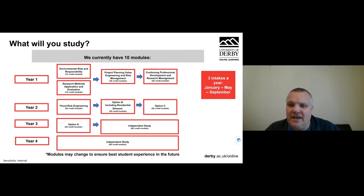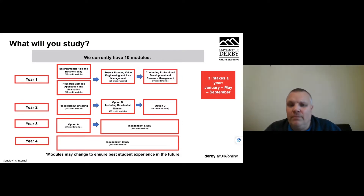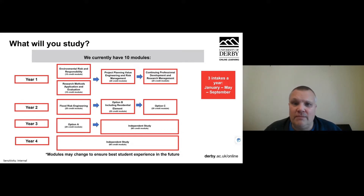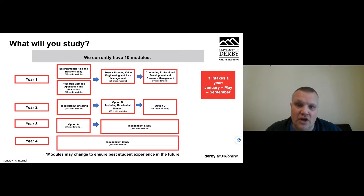There's a map showing how the years work. We offer starts in September, January, and May. In year one you would do environmental risk and responsibility and research methods. In the second trimester you take on project planning, value and engineering risk management, which is 20 credits. And then over the summer, which is the third trimester of year one, you would do your continuing professional development and research management module.